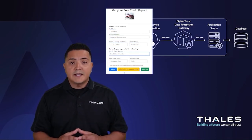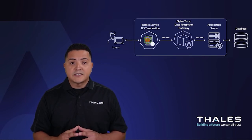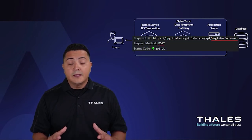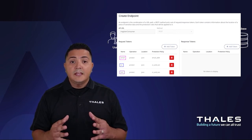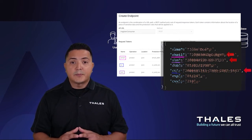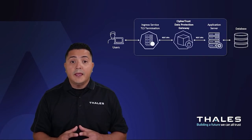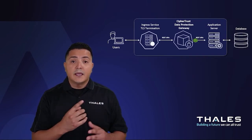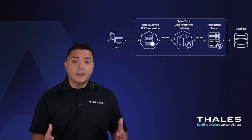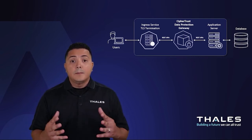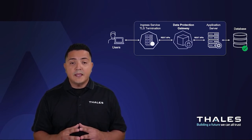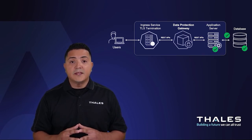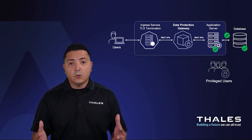Now, when someone completes and submits the form, the CypherTrust Data Protection Gateway container is able to intercept the request, look at the URL, and see if it finds a match based on the endpoints we defined earlier. If it does, it will proceed to encrypt the fields based on the tokens we created earlier and forward the request to the application, ultimately making its way all the way to the database. Because we are encrypting the data before it hits the application or database, we're able to mitigate and reduce the risk of our critical data being exposed from an insider or an external threat.